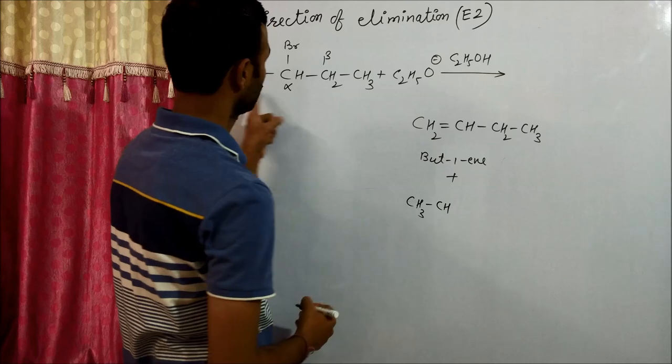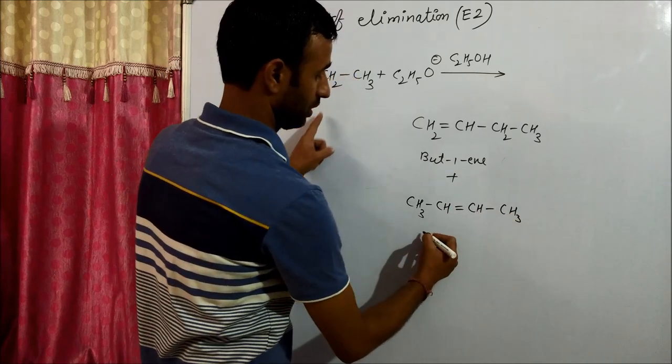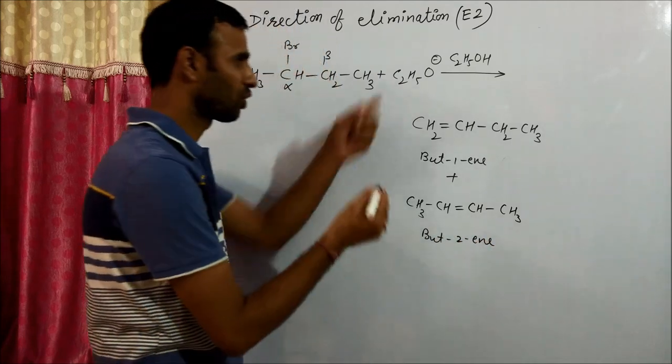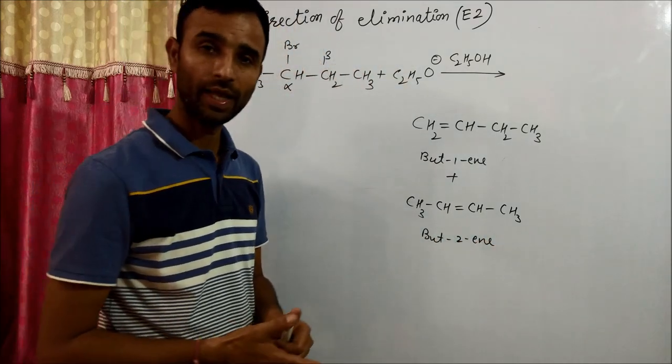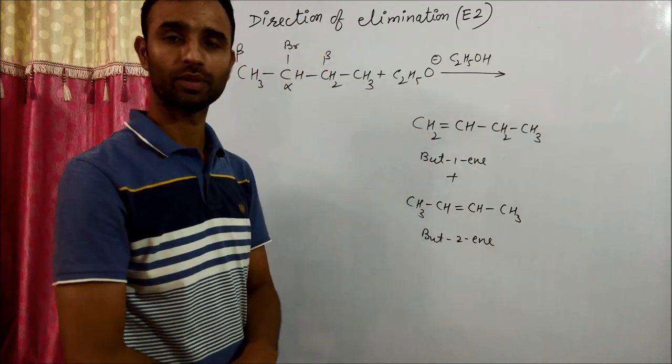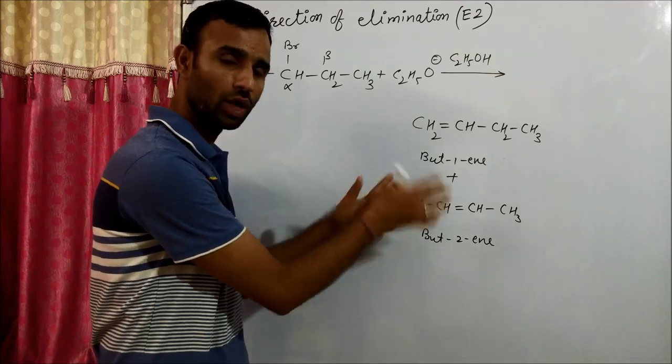And if we remove beta hydrogen right side, this is CH3-CH double bond CH, that is but-2-ene along with bromide ion. Now the case is which one is major or both are formed in equal amount?